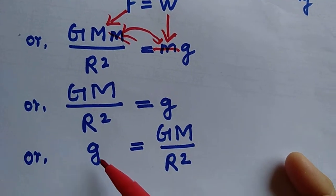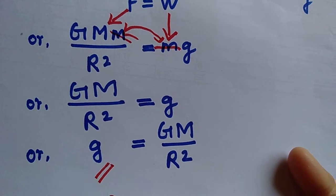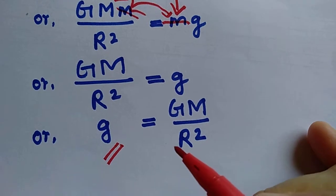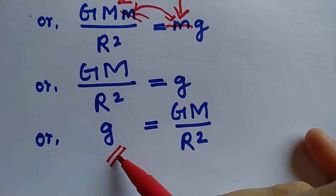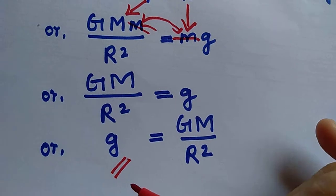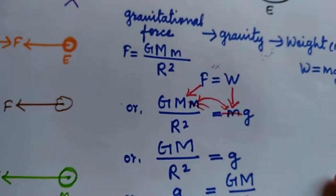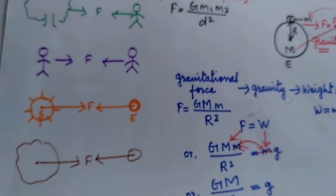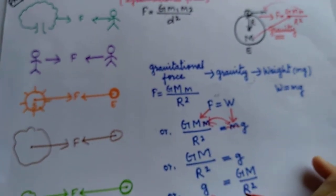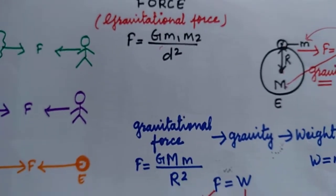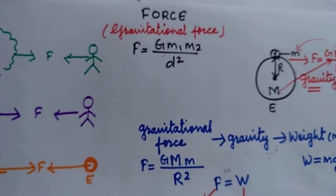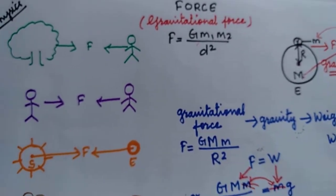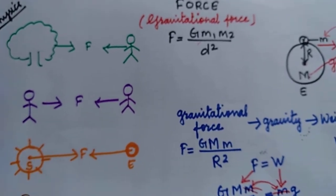In this formula, small g is acceleration due to gravity. We have derived the formula for acceleration due to gravity in this manner. Before this derivation, it was important to understand what is gravitational force, what is gravity, and what is weight. This is the concise explanation of gravitational force, gravity, and weight. In the next part, we are going to discuss question answers related to this topic — the questions which are important for examination.